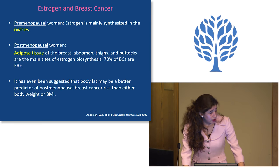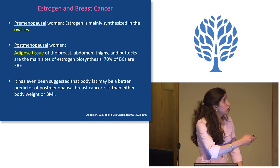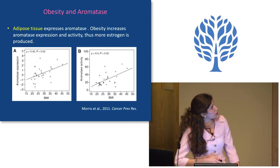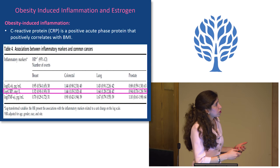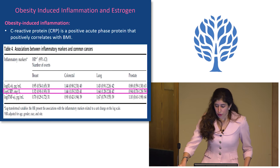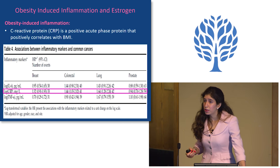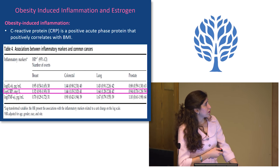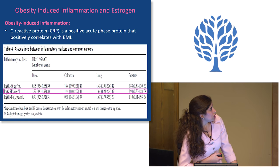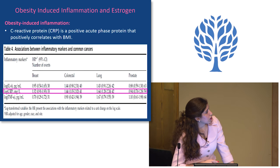It has been suggested that body fat may be a better predictor of postmenopausal breast cancer risk than either body weight or BMI. With higher BMI, there is more aromatase expression in adipose tissue, which leads to increased estrogen. Another alteration associated with obesity is systemic inflammation. Increased circulating levels of C-reactive protein (CRP), a very common marker of systemic inflammation in clinical practice, are associated with a 32% increase in breast cancer risk per 1 mg/L increase in CRP. This is also relevant to other cancers like lung and prostate.